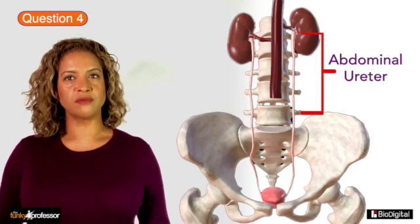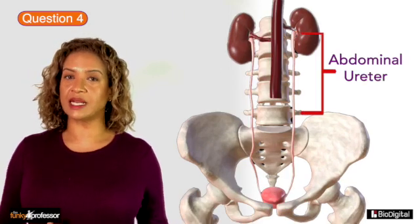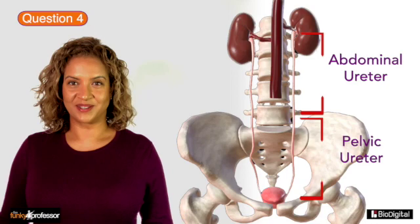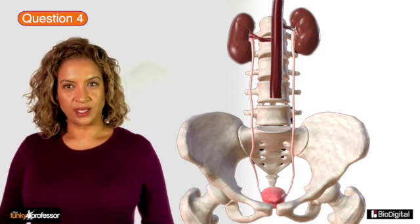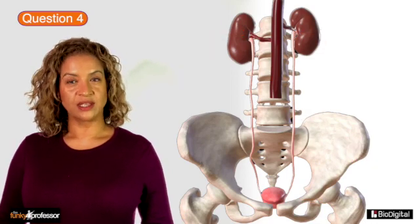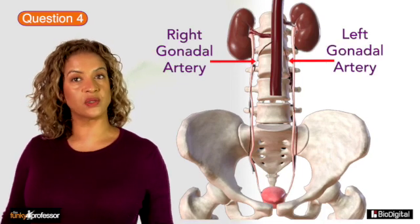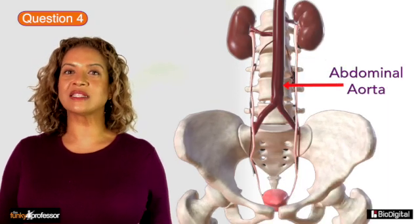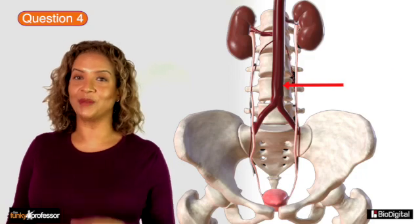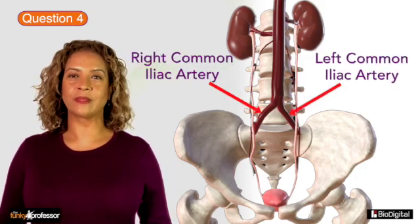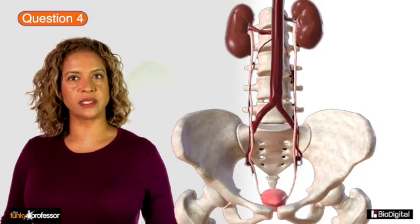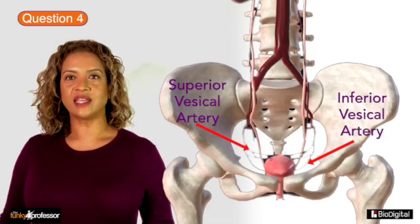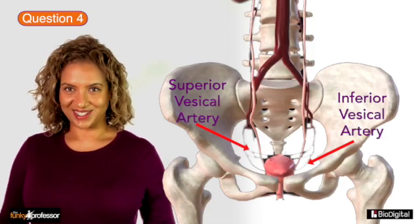The abdominal part of the ureter receives its blood supply on its medial aspect, whereas the pelvic ureter receives its blood supply from its lateral aspect. The abdominal blood supply includes the renal arteries, the gonadal arteries — which are the testicular artery in males and the ovarian arteries in females — as well as direct branches from the aorta itself and the common iliac arteries. The pelvic ureters receive blood directly from the internal iliac arteries and its subsequent branches, which include the superior and inferior vesical arteries.